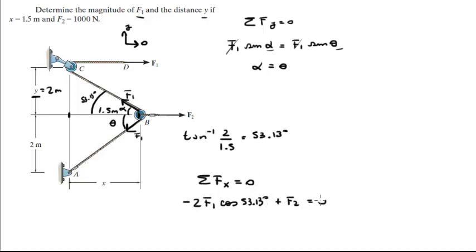Plus F2 is equal to 0. And we know that F2 is equal to 1000, so we just plug it in here and then we solve for F1. And you get that F1 is equal to 833.33 Newtons.